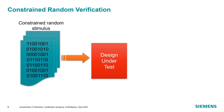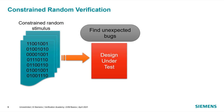Let's talk about constrained random verification in general. We're creating constrained random stimulus and sending it into a design under test. The constraints ensure that the stimulus you create is legal. The randomization allows you to find unexpected bugs, particularly when you have stimulus coming in on multiple interfaces, where the randomness of behavior across those interfaces is more likely to uncover things in the design that you hadn't initially thought about.